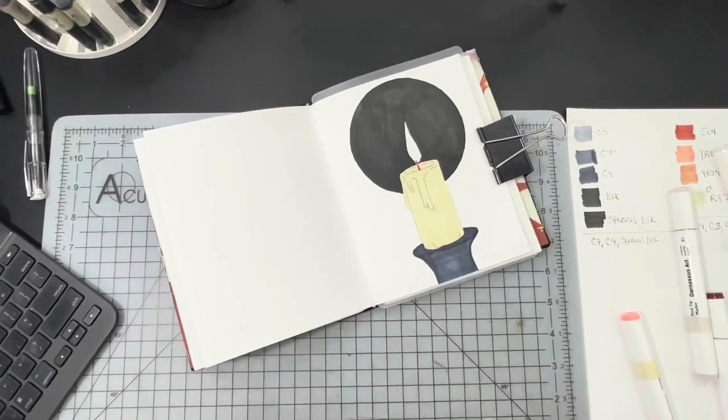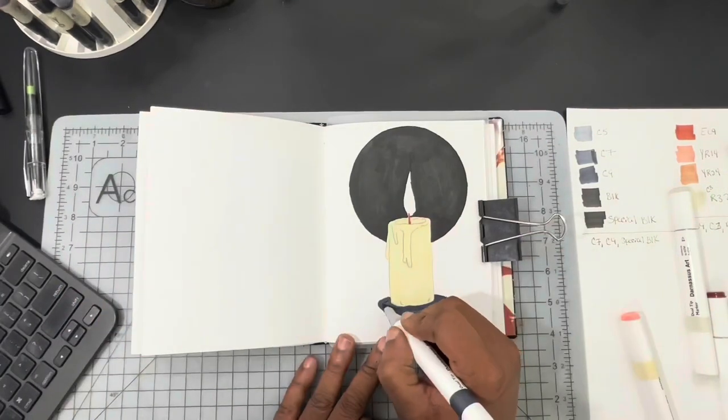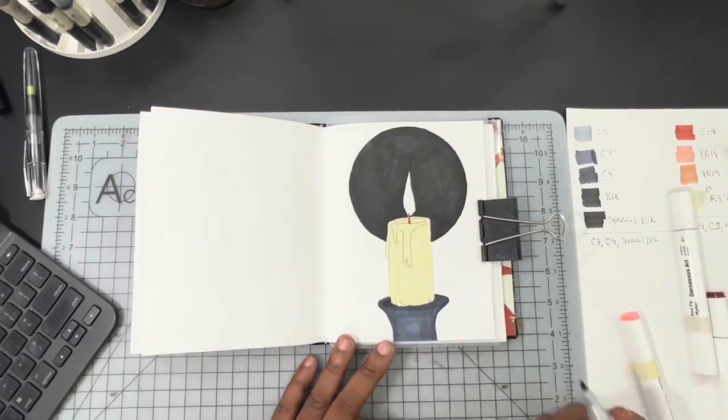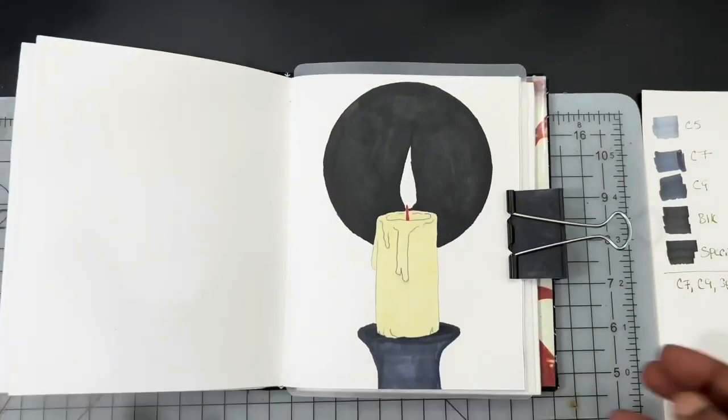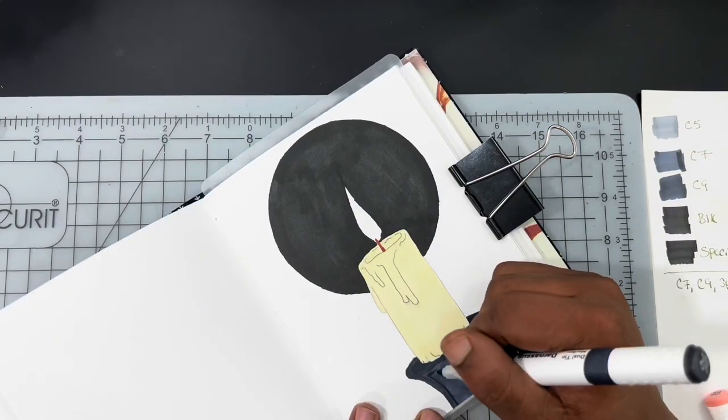So I took two shades of gray, two tones of gray, a cool gray 7 and a cool gray 9 is what I used to do the stand that the candle is standing on. The candle itself is based in with the color peach.